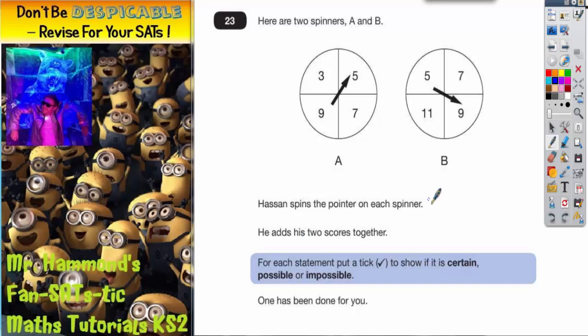Hassan spins the pointer on each spinner. He adds his two scores together. So in this case you would have 5 add 9 which is 14.